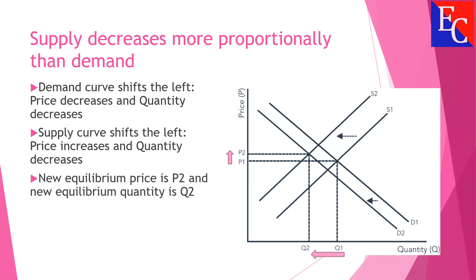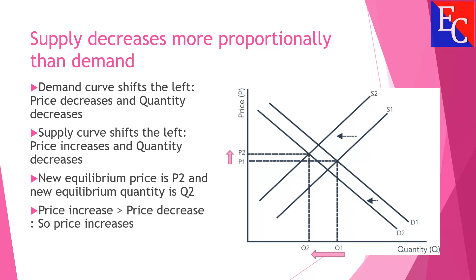The new equilibrium price is P2 and new equilibrium quantity is Q2. In this case, supply decreases more proportionally than demand, so the increase in price is greater than the decrease in price. Finally, price increases and quantity decreases from Q1 to Q2.